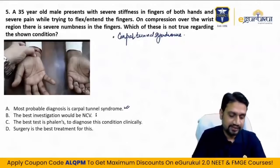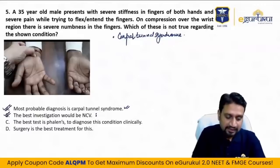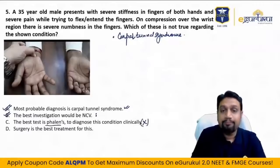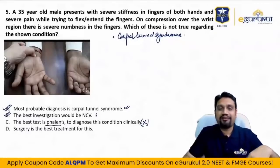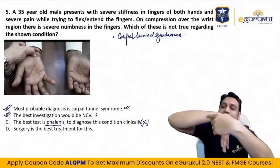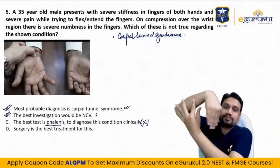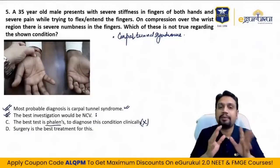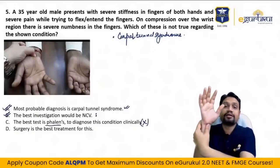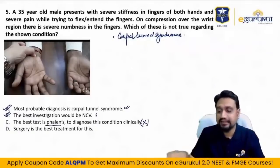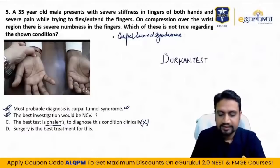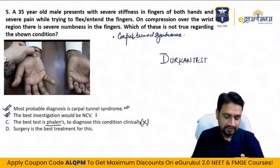Is Phalen's test the best clinical test? No — it is not true. The best clinical test for carpal tunnel syndrome is direct compression over the median nerve, which is called the Durkan test. In Phalen's test, we flex the wrist to compress the nerve. Durkan test — direct compression — is the best clinical test.